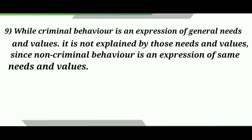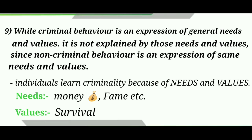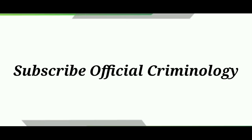The last point is that while criminal behavior is an expression of general needs and values, it is not explained by those needs and values alone, since non-criminal behavior is also an expression of the same needs and values. Sutherland says a person learns criminal behavior because of needs and values — needs may be to get money or fame, and values may be to survive or to survive in a better way. This is all about differential association theory. Hope you understand this theory in a better way.